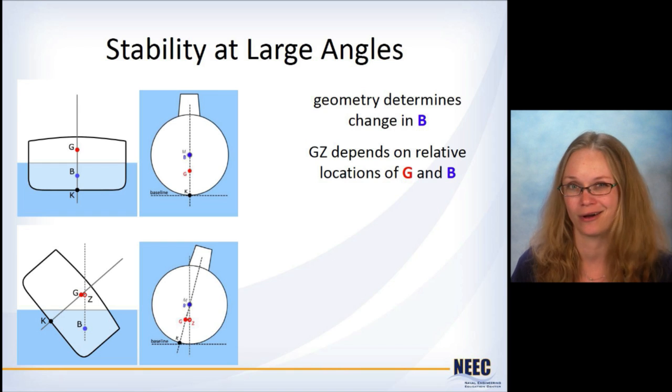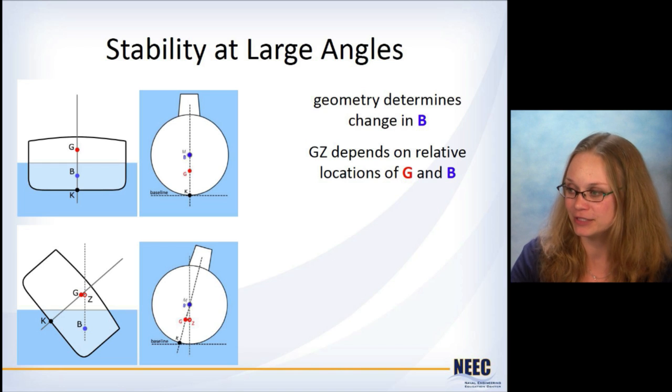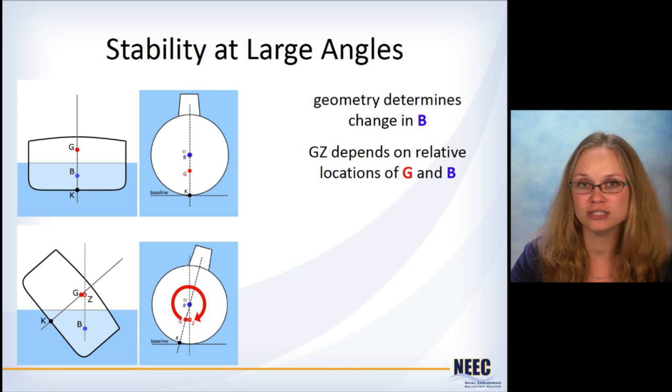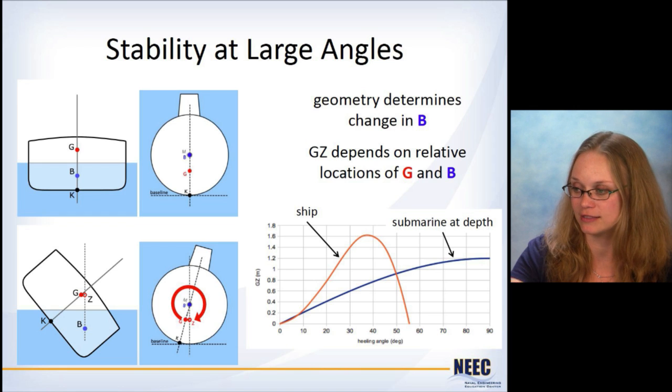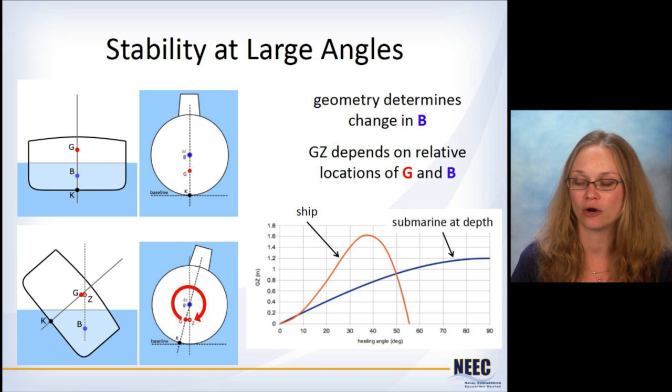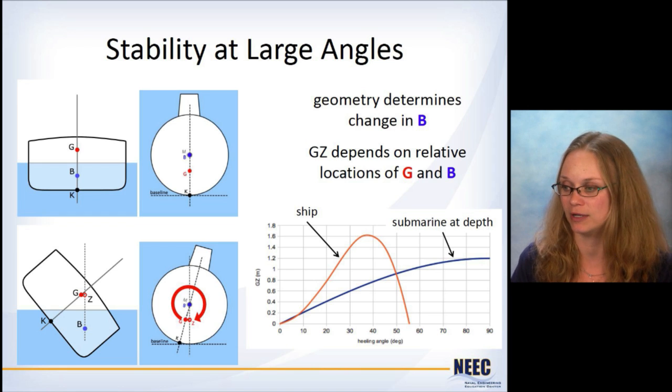G depends on the relative locations of G and B. And in the submarine's case, G is actually just going to essentially go around in a circle. And picture it in your head. I don't have a good way to do a video, but just picture the submarine continuing to rotate and G is just going to track out a circle. And that's reflected in the actual GZ curves for a regular surface ship and for a submarine at depth.